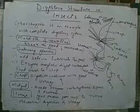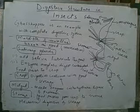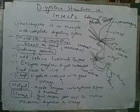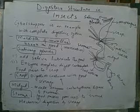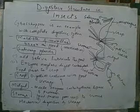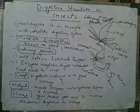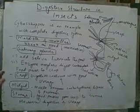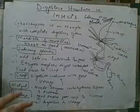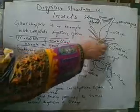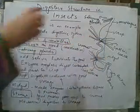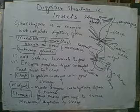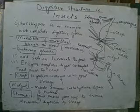The food is stored in the crop, and digestion of carbohydrates also continues there. However, the crop itself cannot create any new enzymes. This is the midgut region, where the enzymes are formed and secreted.